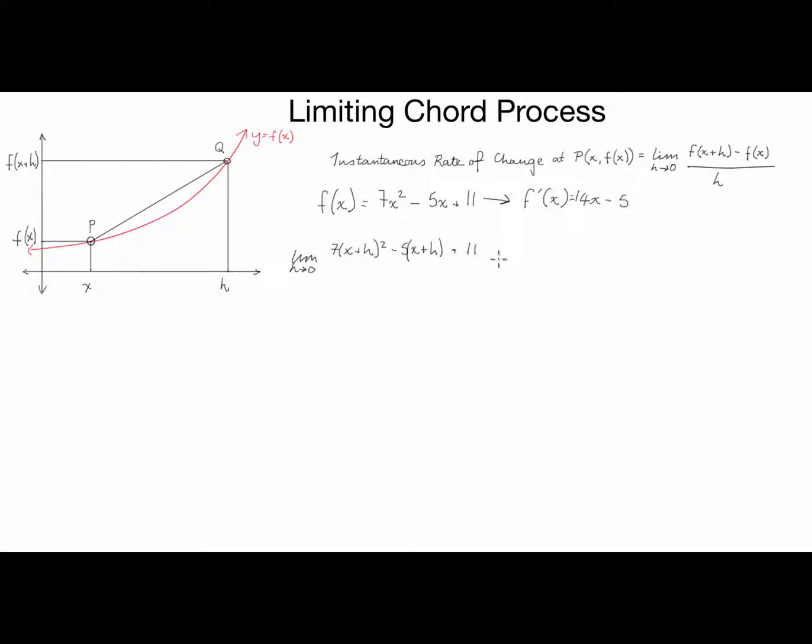Then we have to take away f of the function at x, which is just 7x² - 5x + 11. Now sometimes people have a tendency to get their negatives mixed up and positives mixed up here, so I'll put that in brackets. And this is all divided by h.